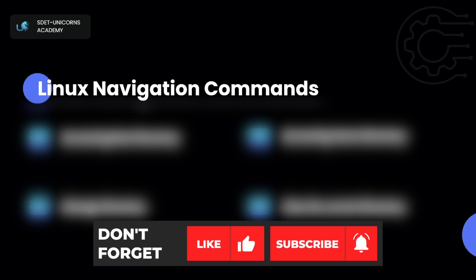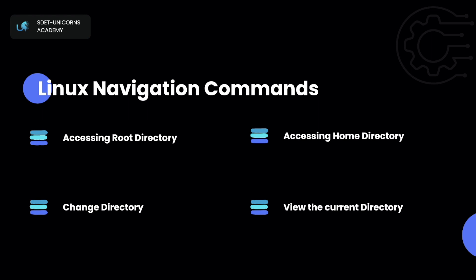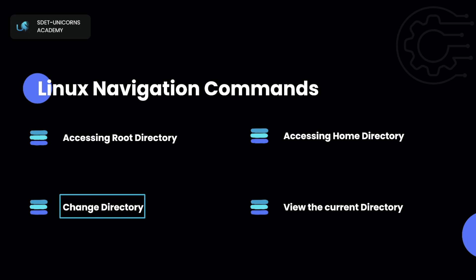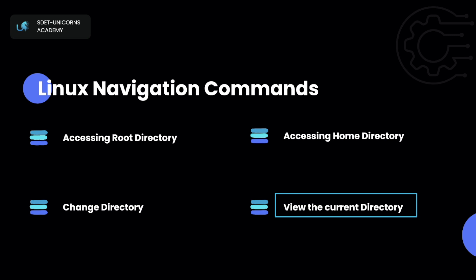Let's go ahead and get started and take a look at the different topics we're going to cover. We're going to talk about different directories — what is a root directory, how can you access it, what is a home directory, how can you access it, and then how can we change directories. How can I go from my home directory directly to my desktop or from desktop back to home? We'll also see how we can view our current directory using pwd, which is useful when you need to copy your current path for files or utility functions you're building.